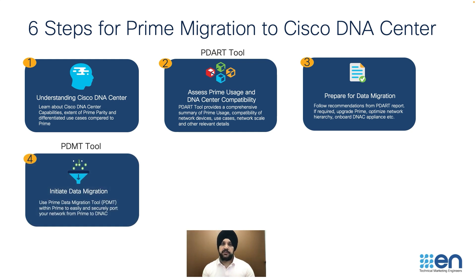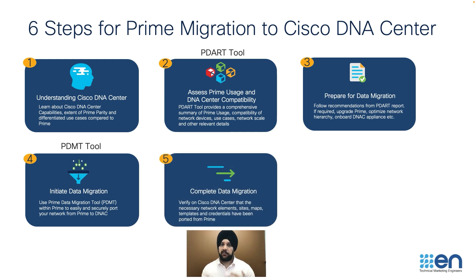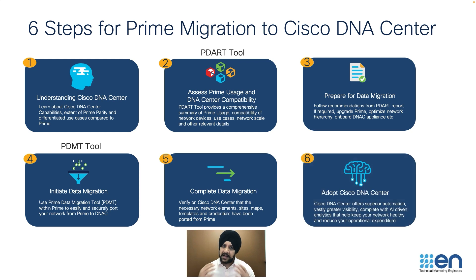For the migration, we have built a tool called the PDMT tool, which is the Prime to Cisco DNA Center data migration tool. This tool runs API calls between Cisco Prime and Cisco DNA Center and migrates all of your sites, devices, CLI templates, configuration, and ICMX from Cisco Prime to Cisco DNA Center. The fifth step is about verification to make sure everything got migrated properly. And then the last part is about adoption — this is where all of your network is on Cisco DNA Center and you can leverage more use cases.